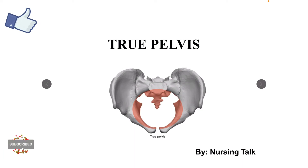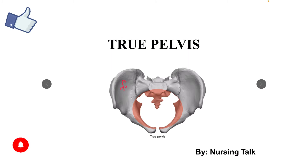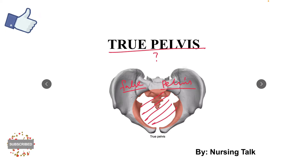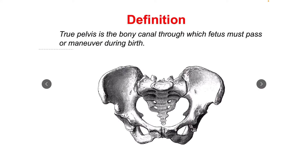This is Nursing Talk and today I will be talking about the true pelvis. The true pelvis is defined as a bony canal which guides the fetus for delivery. We call it a bony canal because it is a passage where a baby passes through, and every side is bony: posterior is sacrum or coccyx, lateral is ileum, and anterior is the pubic body.